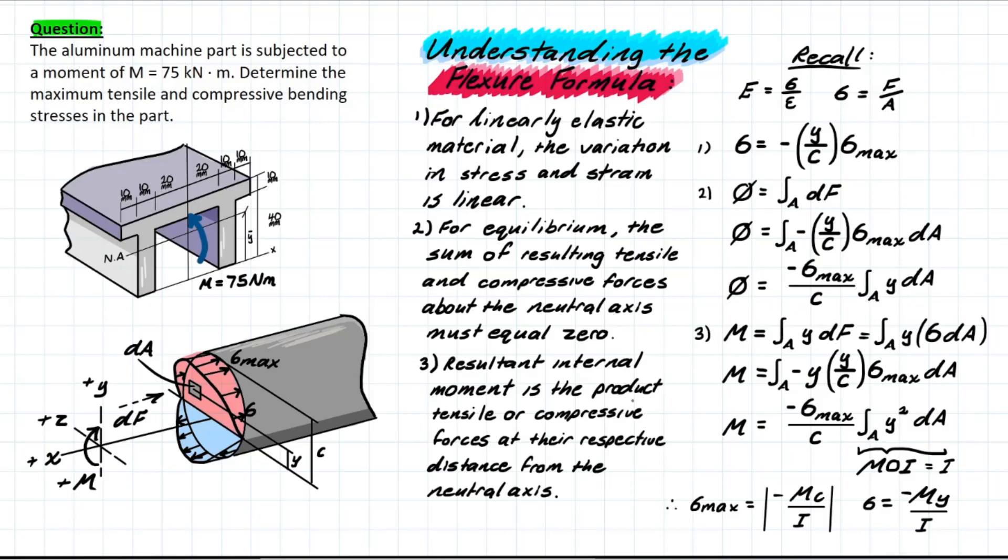The third condition is using a similar logic as well. We understand that the result in internal moment is going to be the product of tensile or compressive force at the respective distance from the neutral axis. In other words, moment is equal to force times distance, which is the fundamental moment formula. And that's what it's taking at the start right here. So we have over the entire cross sectional area, we're taking the distance from each element times the force developed in each of those elements. And you similarly proceed with plugging in as we've done previously.